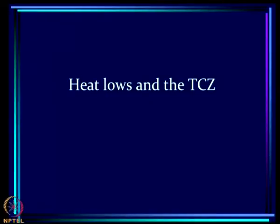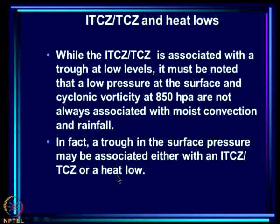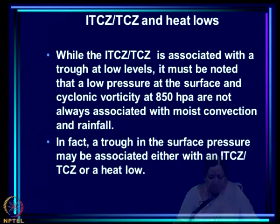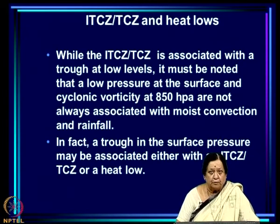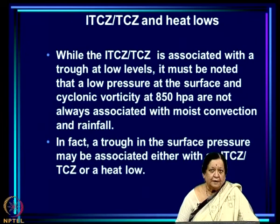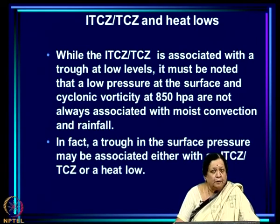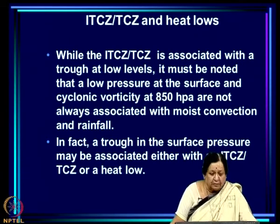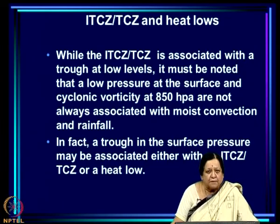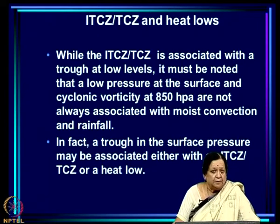Today we are going to talk about heat lows. These are systems typical of the Sahara Desert or Rajasthan Desert, and their interrelationship with the TCG, which is responsible for most of the large-scale rainfall in the tropics. While the ITCG is associated with a trough at low levels, a low pressure at the surface and cyclonic vorticity at 850 hPa are not always associated with moist convection and rainfall. Having a low pressure or cyclonic vorticity at 850 millibar are necessary conditions but are not sufficient conditions.